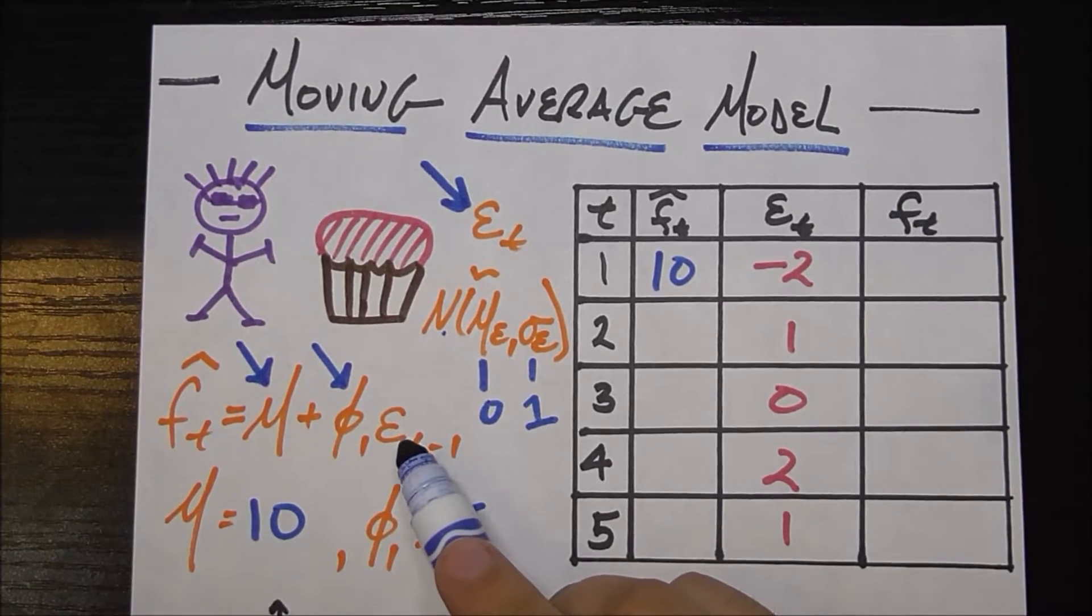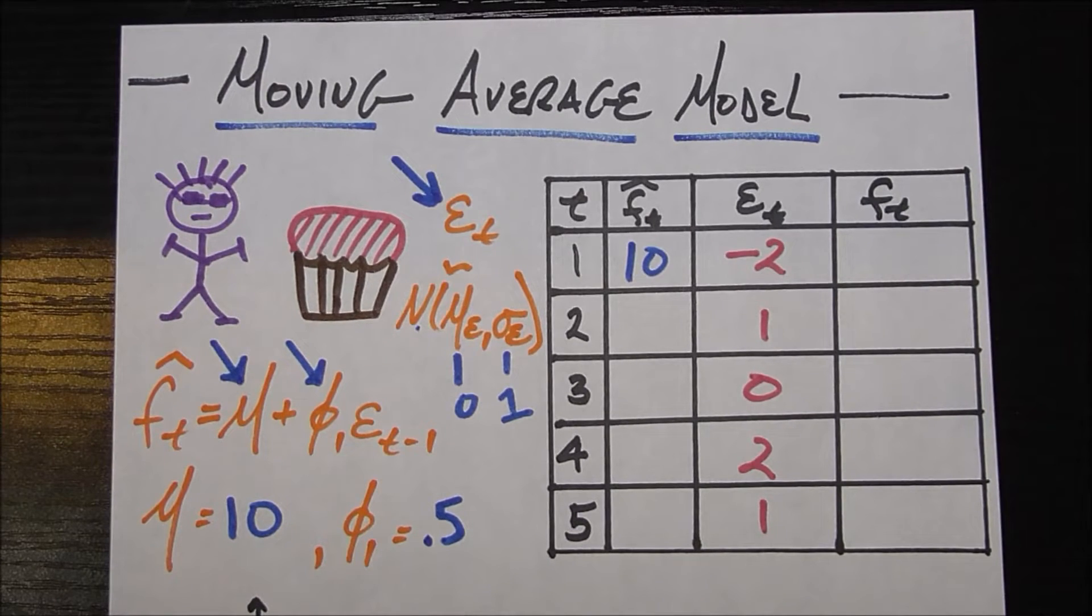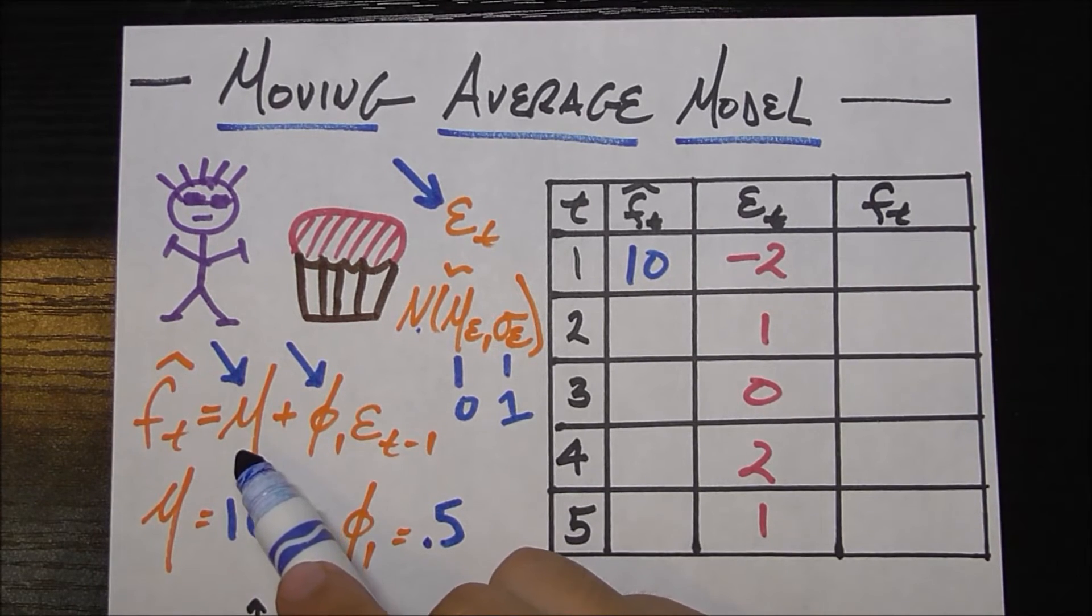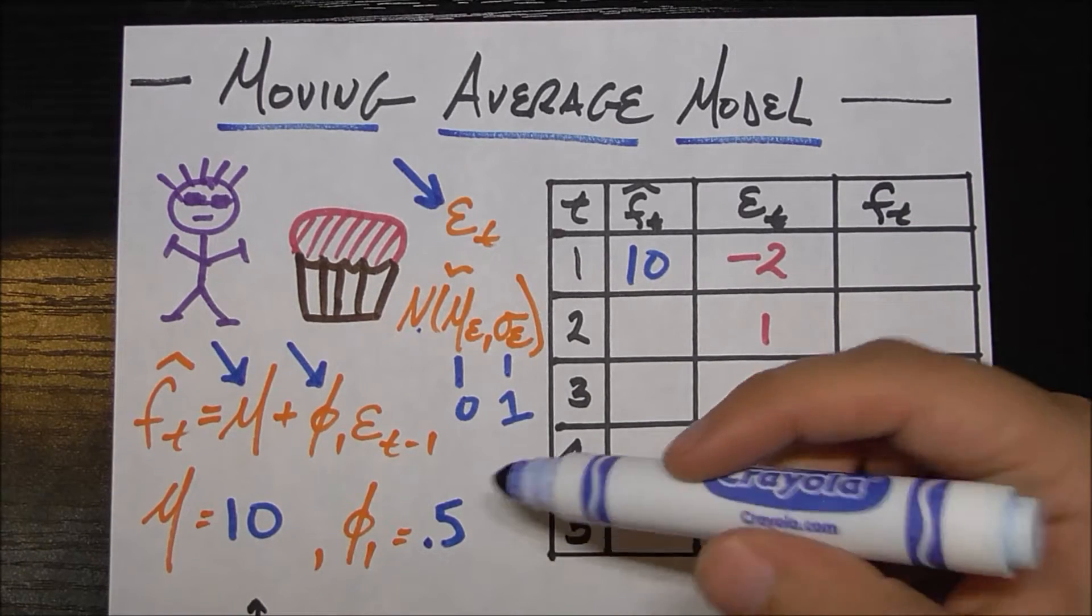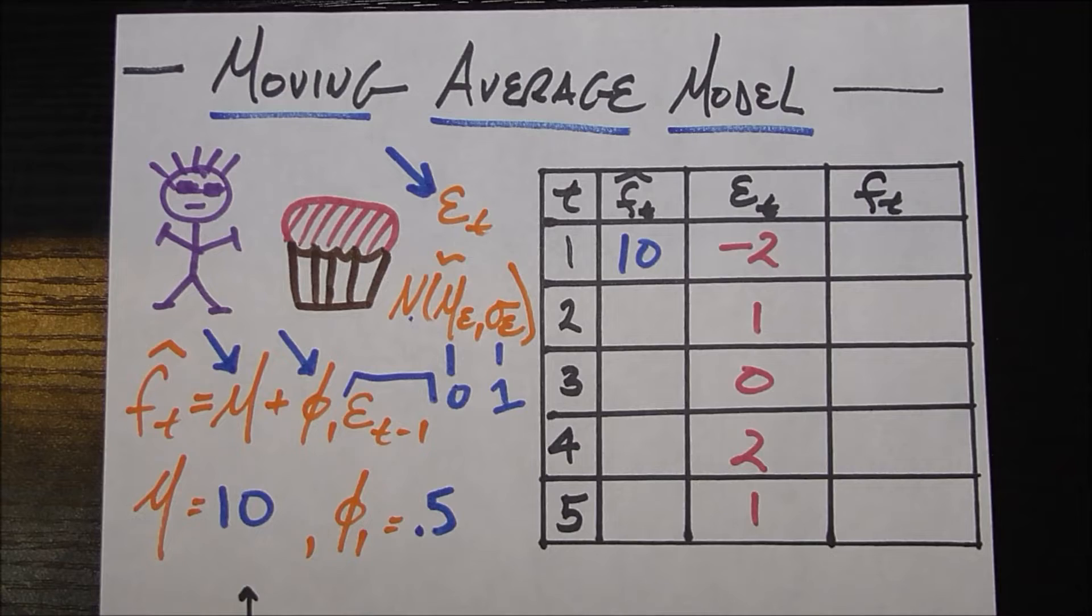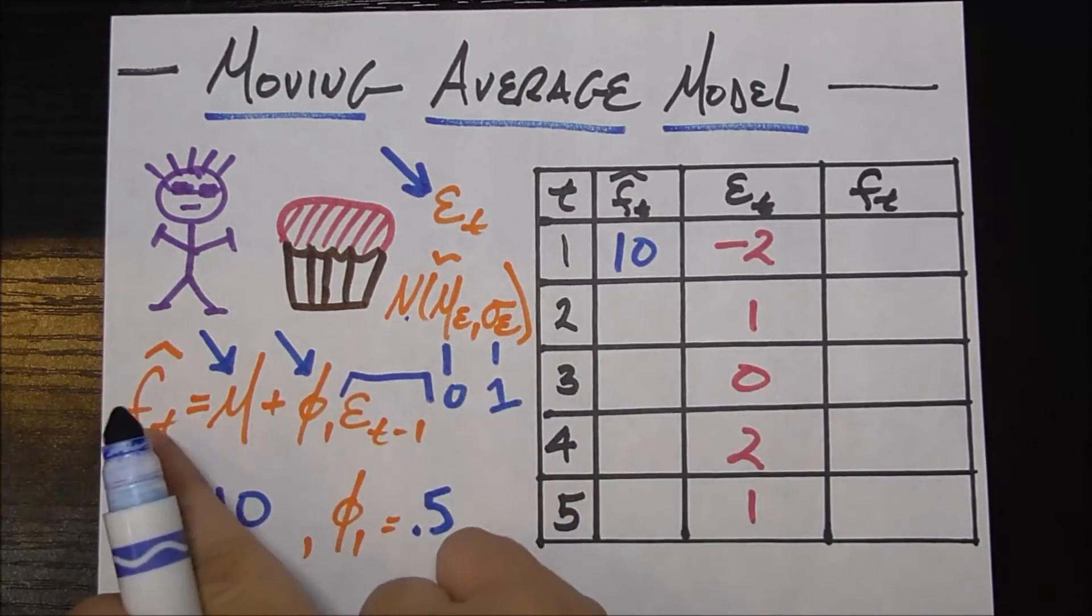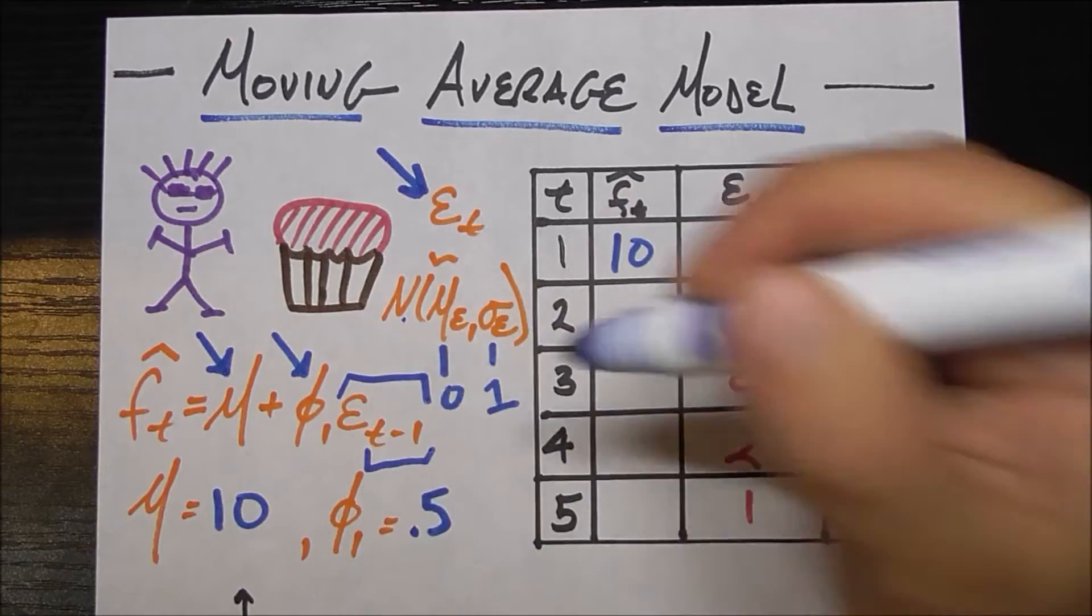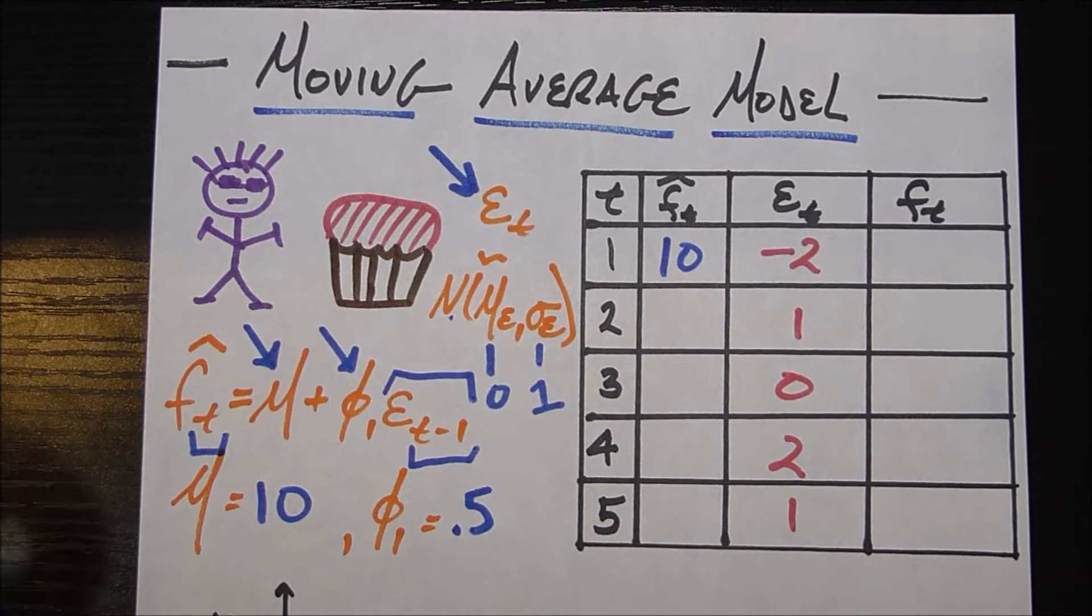Phi sub 1 times the error from the previous month. Now let's pause for a second, let's think about why this model makes sense. So basically this model is telling the story of, I'm always going to bring 10 cupcakes to the party, but I'm going to adjust that by 50% of whatever the professor said was my error last month. So it's very natural when you think about it, because you're basically just taking information about how wrong you were in the previous time period to make a better estimate for the current time period. And just to hit that point home, notice this is t minus 1, so that's the previous time period. And here we have t, so that's the current time period.